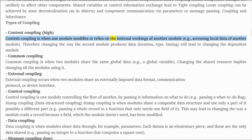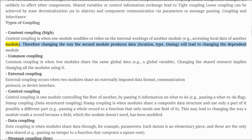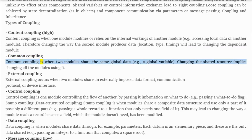Types of coupling — Content coupling: this is when one module modifies or relies on the internal workings of another module, e.g., accessing local data of another module. Therefore, changing the way the second module produces data — location, type, or timing — will lead to changing the dependent module.